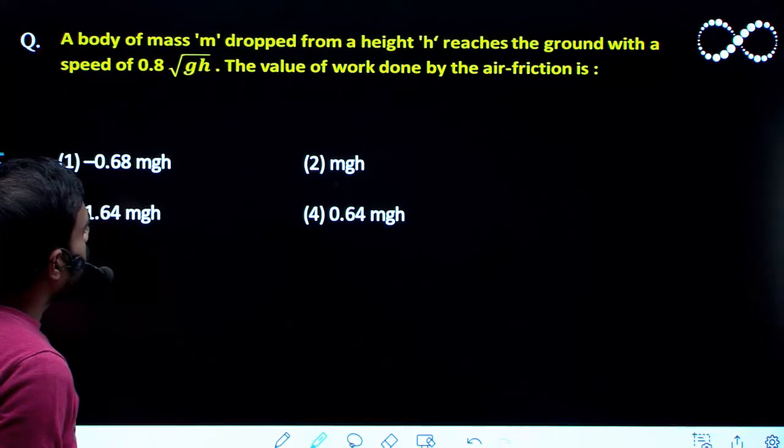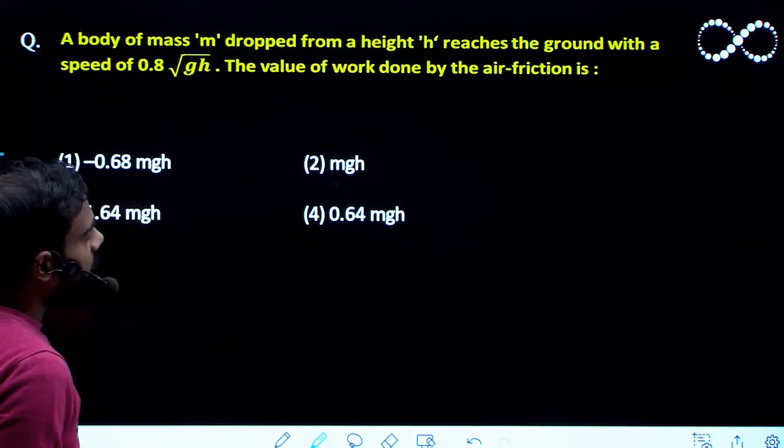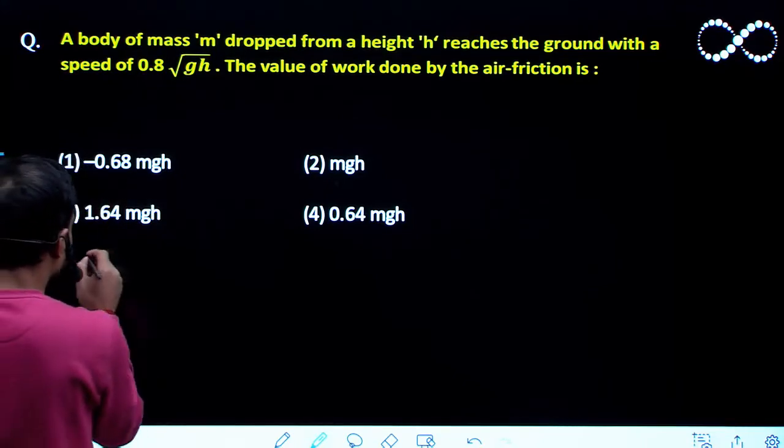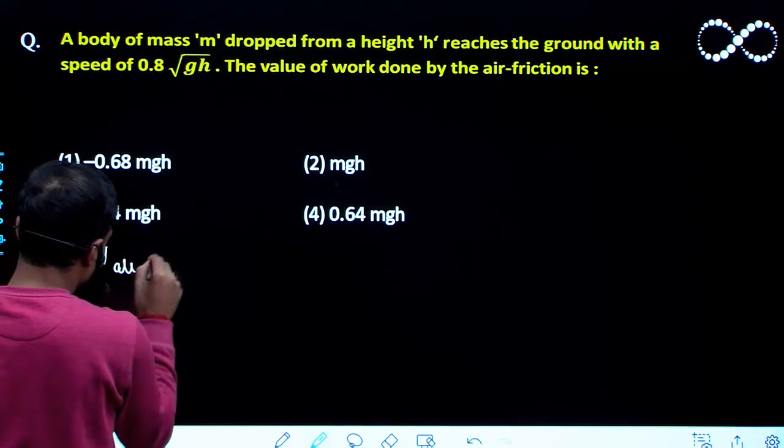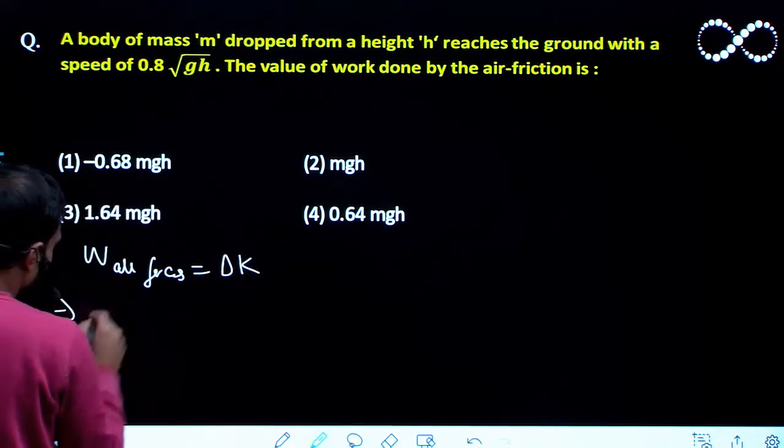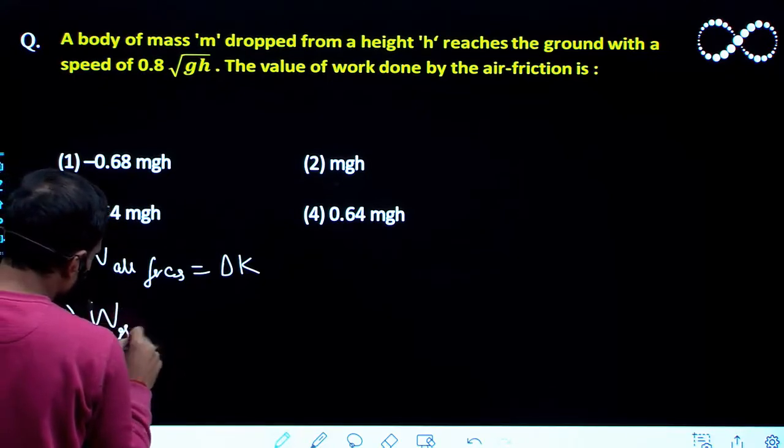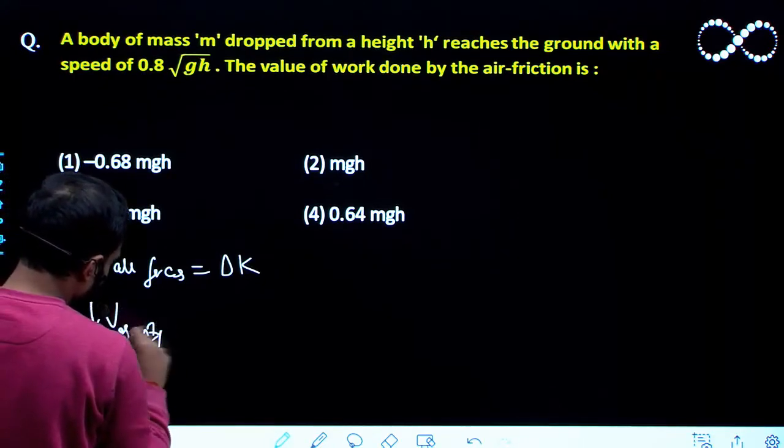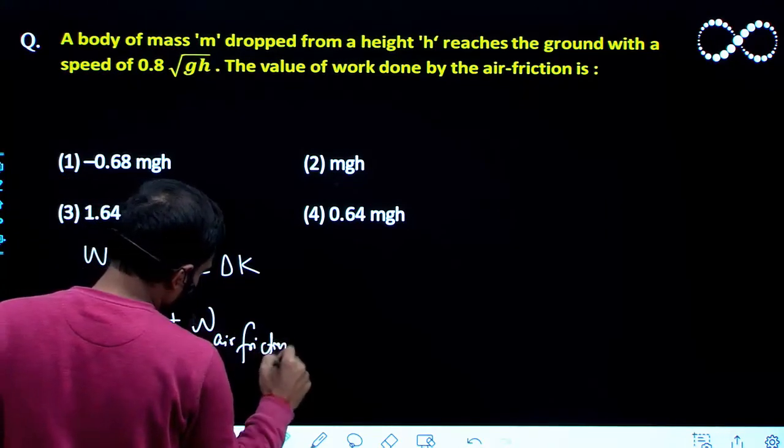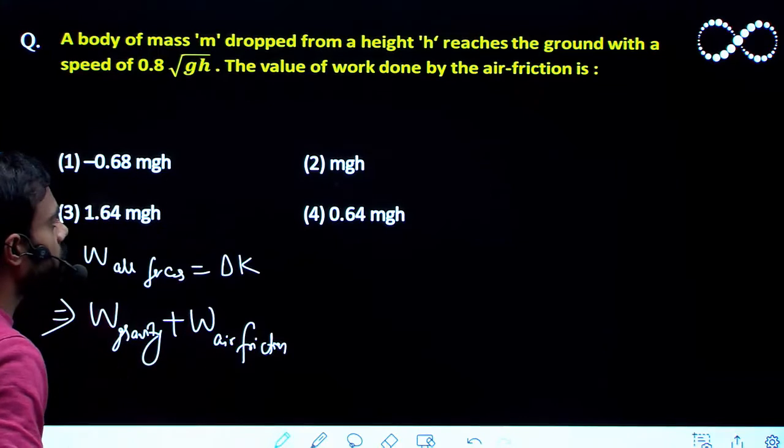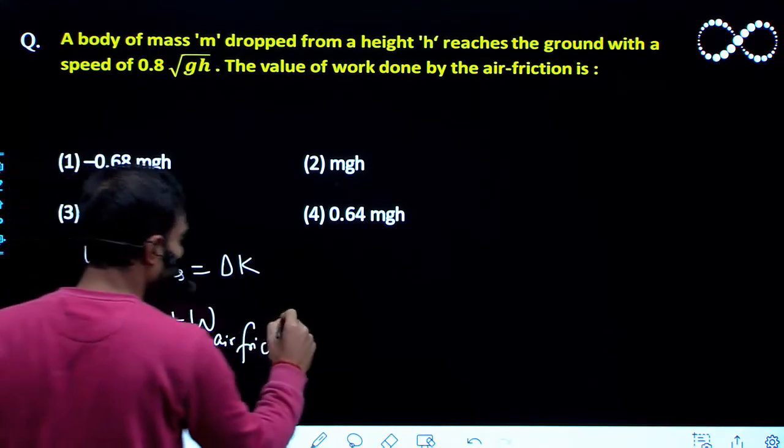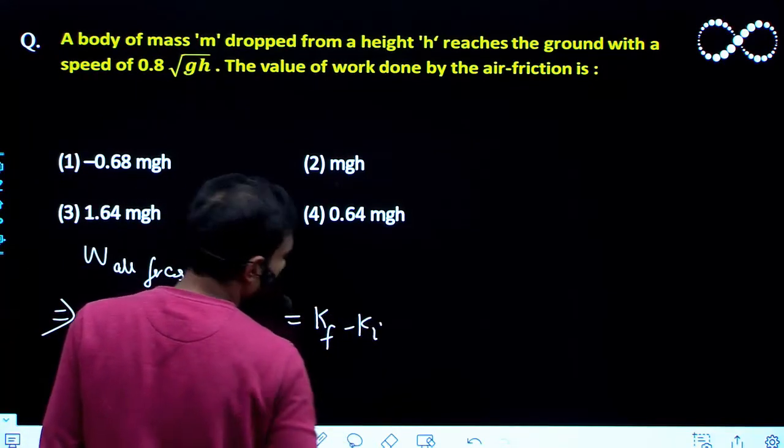I can use the work-energy theorem here. Work done by all the forces is equal to change in kinetic energy. So work done by all forces equals delta K. What are the forces acting? Work done by gravity plus work done by air friction. When the ball falls, only two forces act: gravity and air friction. So work done by all these forces will be delta K, that is K final minus K initial.